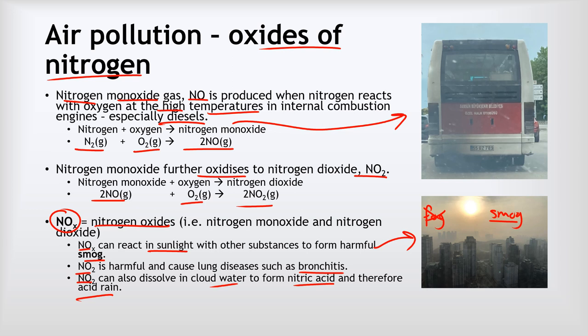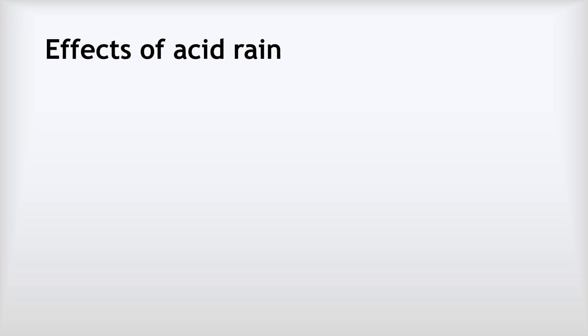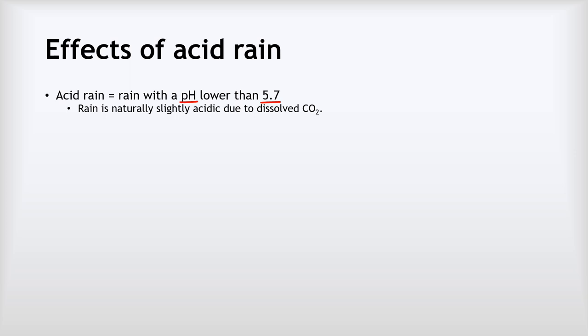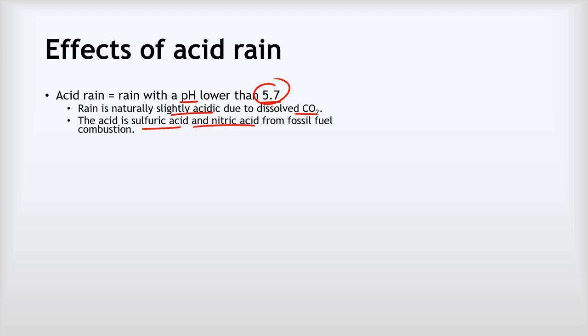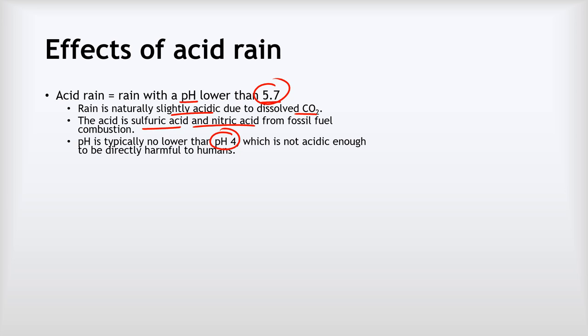Acid rain is any rain with a pH lower than 5.7. Rain is naturally slightly acidic due to dissolved carbon dioxide, around pH 6 to 6.5, so anything below pH 5.7 is unnatural and results from dissolved sulfuric acid and nitric acid from burning fossil fuels. Acid rain is typically no lower than pH 4 and is not acidic enough to be directly harmful to humans — if caught in it, your skin won't blister — but it does have long-term and significant effects on both the natural and built environment.